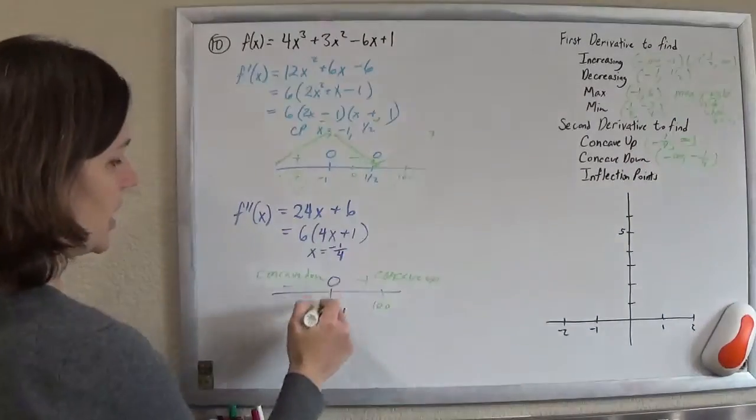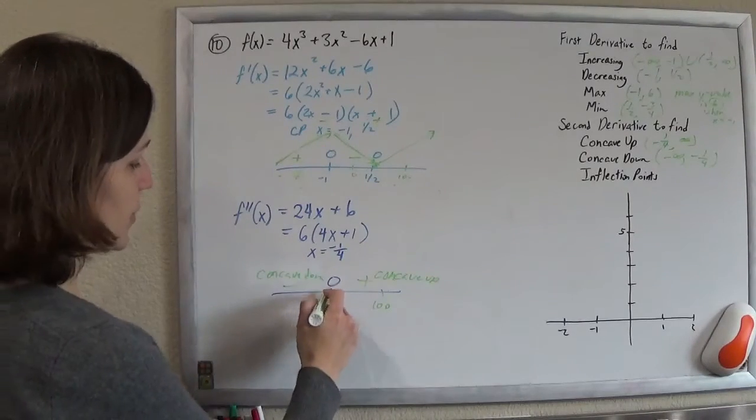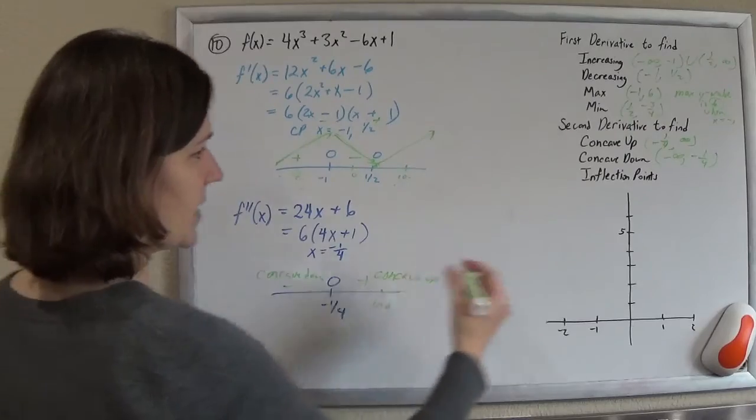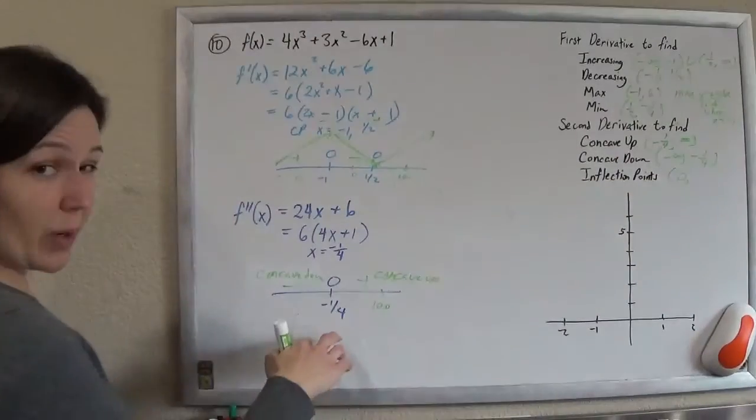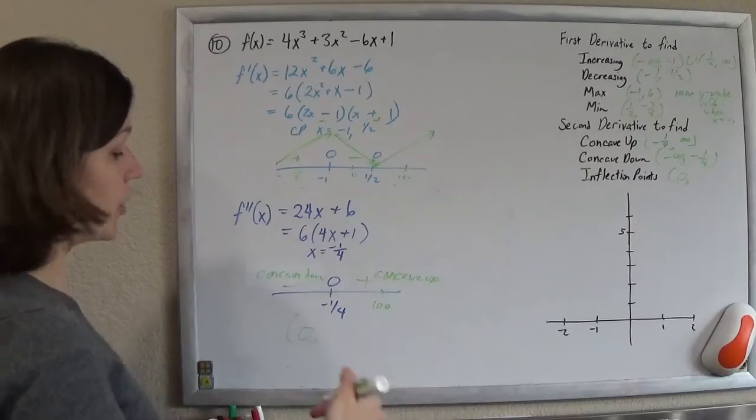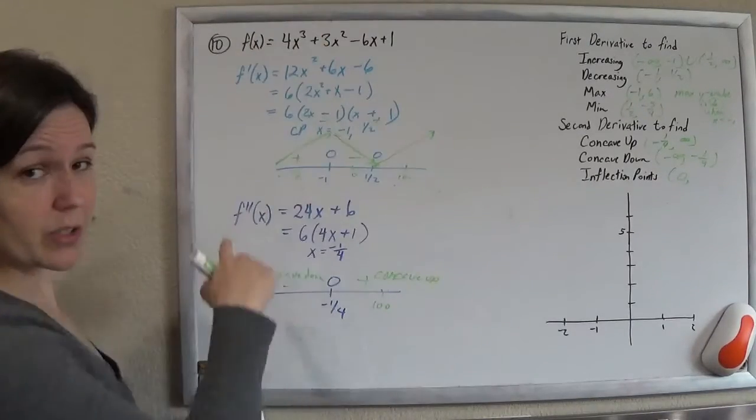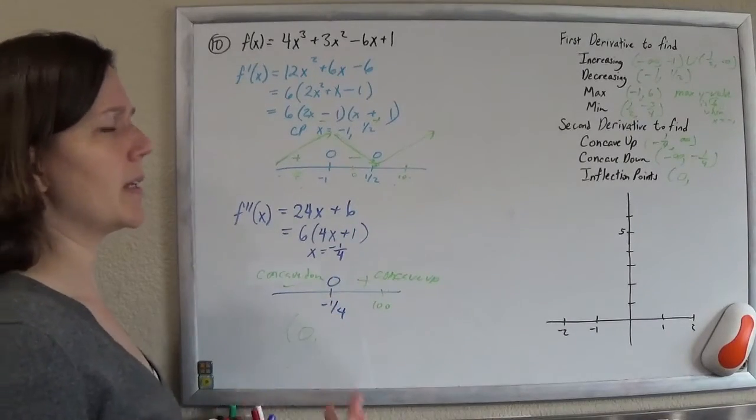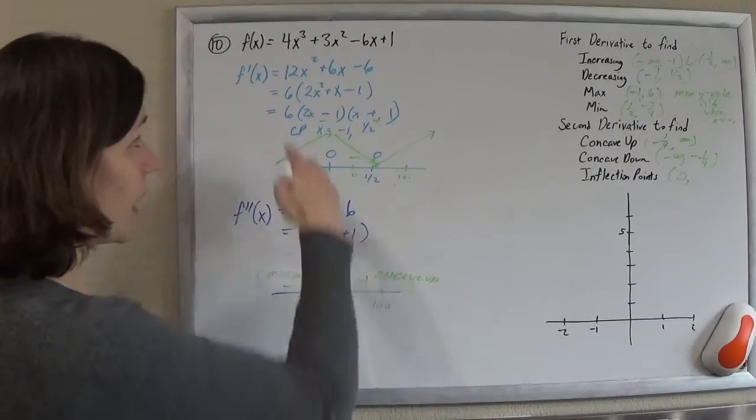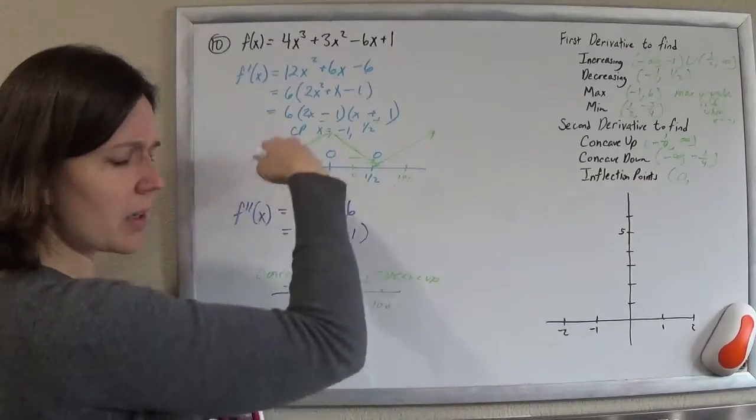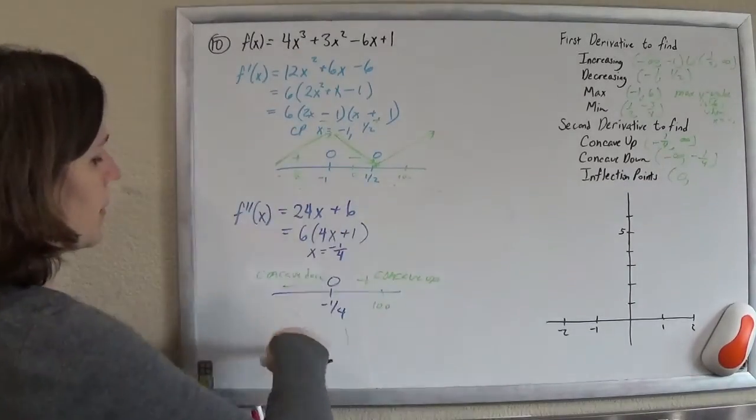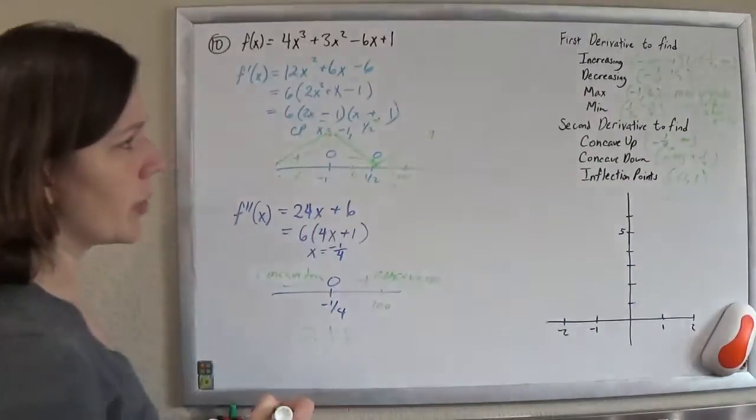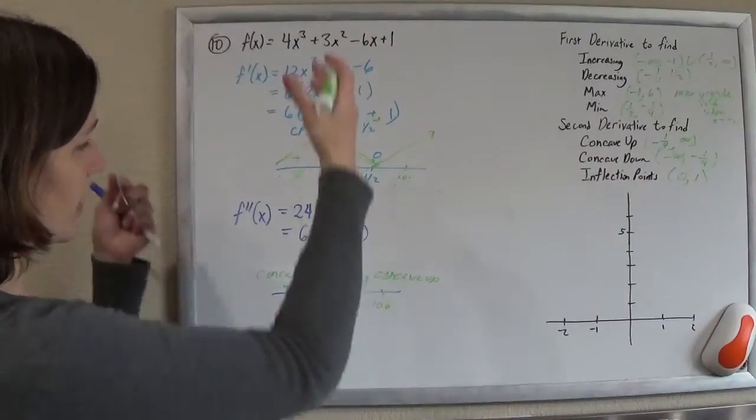And because it changed from going, changed concavity at this point, that point is my inflection point. So if I want to find that ordered pair of that point, if you want to find an ordered pair of actual point on your graph, you plug it back into the original function. A lot of times I remember myself being confused when I was taking it. My teacher would be like annoyed. He's like, dude, you want to find an ordered pair? Put it back into there. Why would we put it back into one of those? I don't know. But, you put in zero and you get a one. So your inflection point is (0, 1).